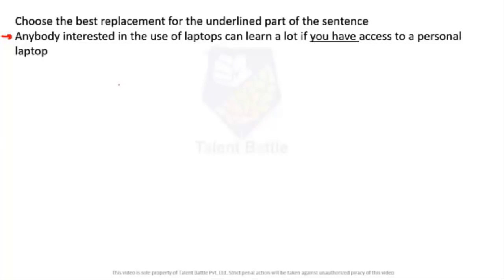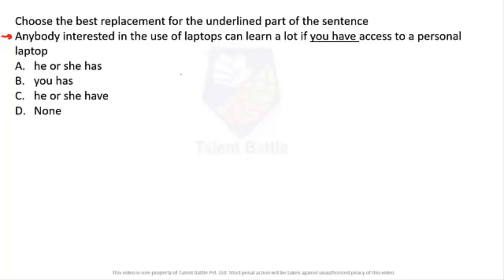Now I'll show you the options. This is a sentence correction question. There is a rule called pronoun-noun agreement. If you observe, the noun here is 'anybody.' 'Anybody interested in the use of laptops can learn a lot if you have access to a personal laptop.' Now 'anybody' is the subject — is it singular or plural?